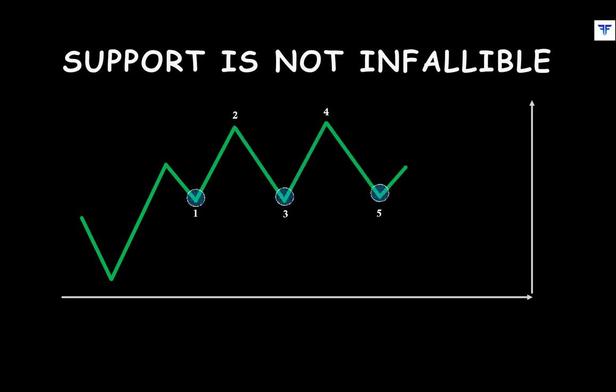Up until now, what we saw was a former low or a zone of lows providing support to price. That said, do not presume that a former support or a support zone would always hold. Previous supports can and do break going forward in time, and when they do, it indicates continued selling pressure until the next level of support is reached.